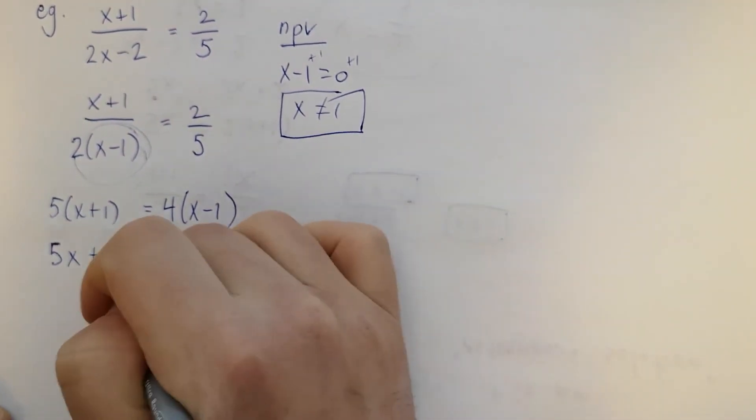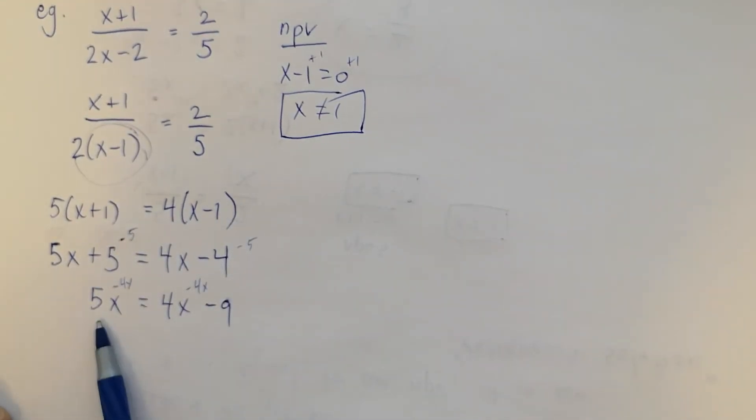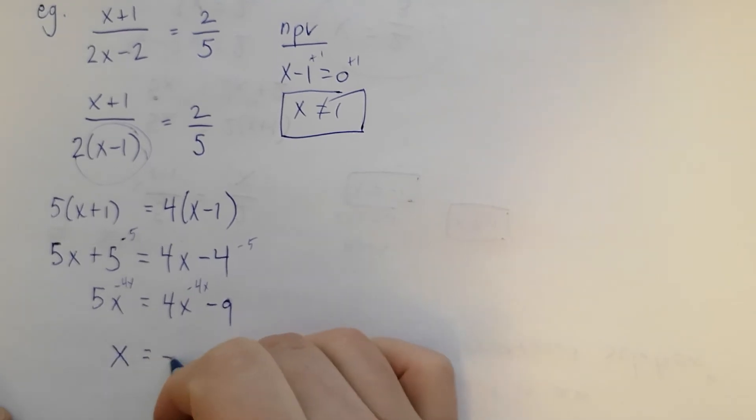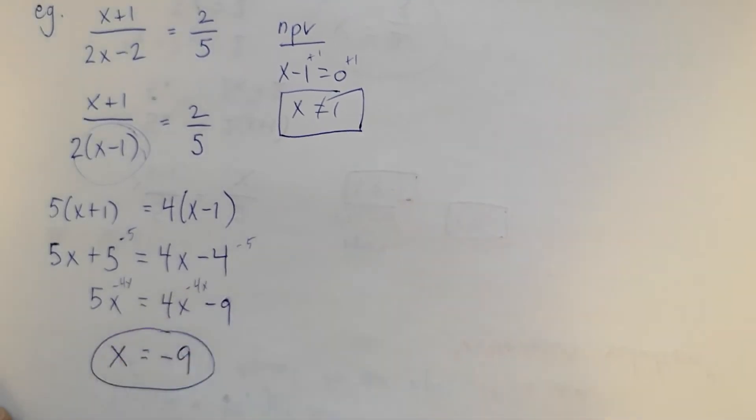I'll subtract four x from both sides. Five x minus this four x is just going to leave us with one x, which is what we want. Here's our solution: x equals negative nine. Negative nine is not equal to one, so this is a good solution.